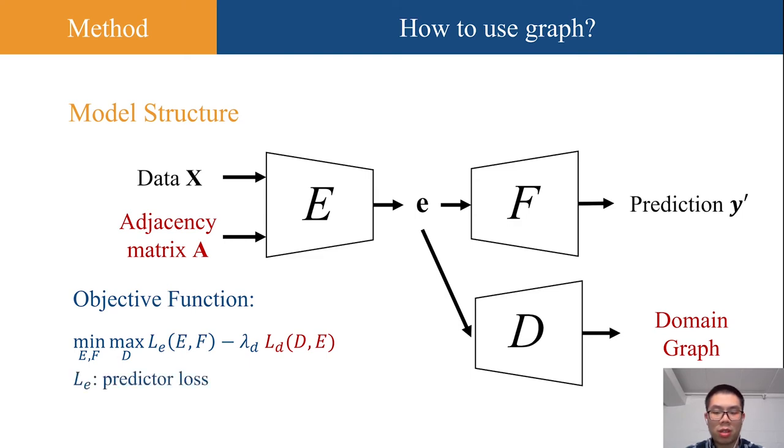Here, LE denotes the predictor loss, and LD denotes the graph discriminator loss. The discriminator will try to reconstruct the domain graph, and the encoder tries to fool the discriminator by removing domain-related information. To achieve this, the encoder takes the adjacency matrix of the domain graph as an extra input.